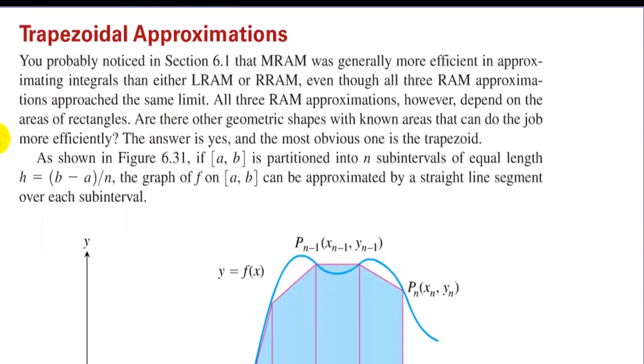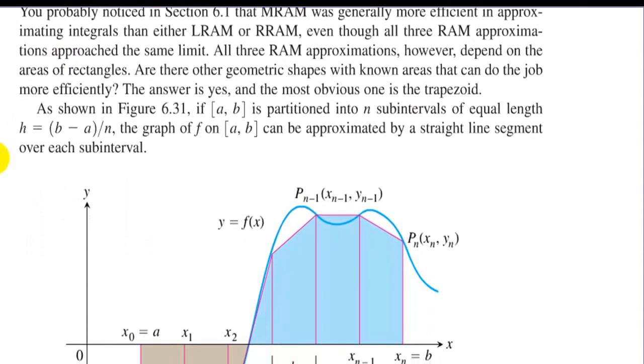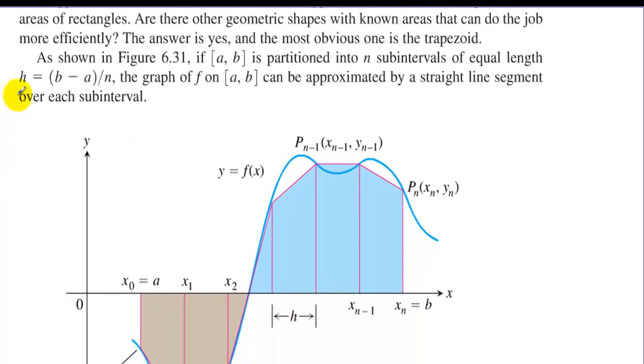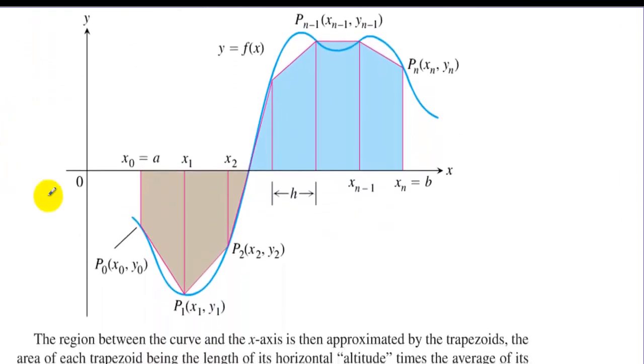Well, maybe it's obvious, but it certainly is obvious once you take a look at how sometimes it fits the curve very well. As shown in figure 6.3.1, if [a, b] is partitioned into subintervals of equal length, the graph of f on a to b can be approximated by a straight line segment over each subinterval. Look how we have this curve and we're approximating the area under the curve using trapezoids rather than using rectangles.